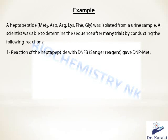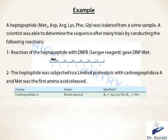First, the reaction of the heptapeptide with dinitrofluorobenzene gave DNP-methionine. DNFB is used to determine the N-terminal amino acid — it reacts with the free amino group. In this exercise it yields DNP-methionine, so the N-terminal amino acid, which is the first amino acid in this peptide, is methionine.